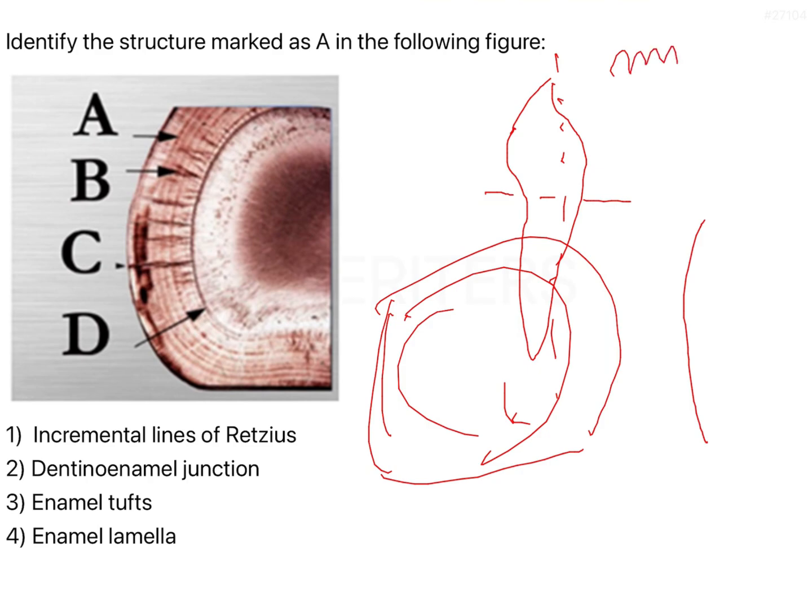When you have your ameloblasts and the matrix has been secreted, then the ameloblasts move forward. During this phase where they move forward, there is no matrix secretion, so there's no calcification occurring. That's why it occurs in increments—the enamel is getting deposited incrementally. All your hard tissues get deposited in increments; it is not a single process. Because there